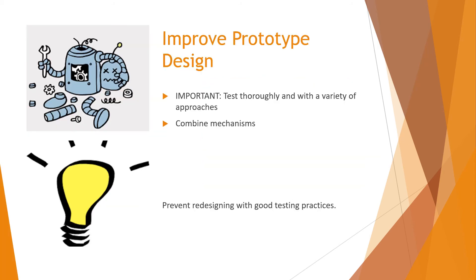The prototypes of each mechanism should be tested thoroughly with a variety of testing. A good example is testing a variety of motors on the intake to evaluate the differences in speed of grabbing the game element or to see if more torque may be necessary. If testing is unsuccessful, it is sometimes beneficial to go back to design ideas to see if any other ideas may be better. Once a successful prototype is found from testing it individually, it is good to start combining mechanisms together to test how they interact. A good example is testing an intake with a chassis to test how the intake mechanism may be impacted by the speed of the robot or how the chassis approaches the game element with the intake on board. By conducting a substantial amount of testing, it will help to prevent redesign from occurring later in the season.